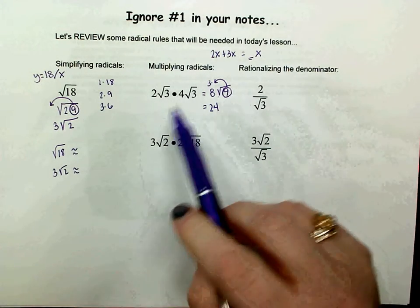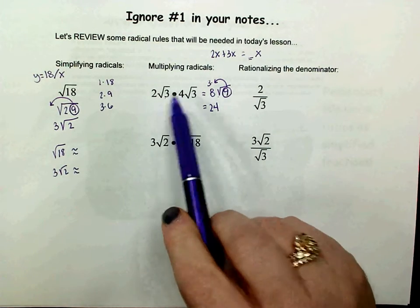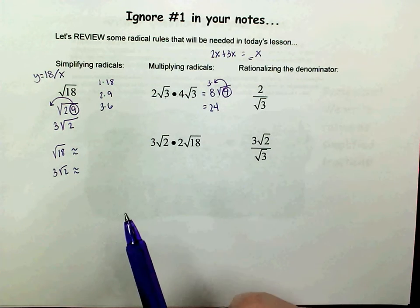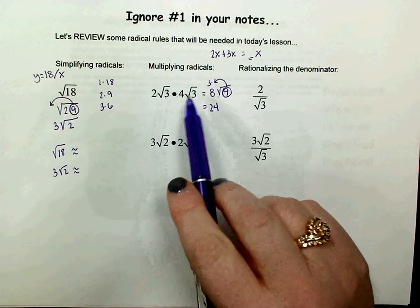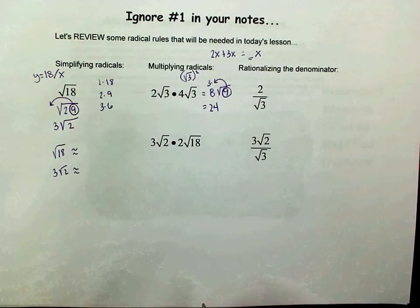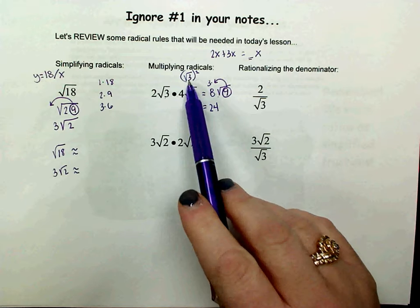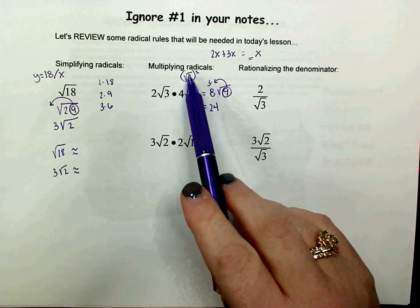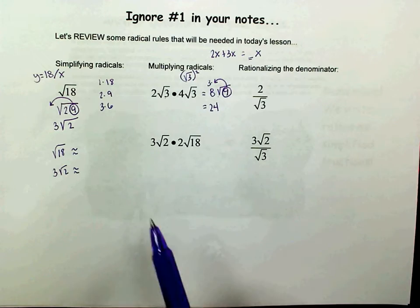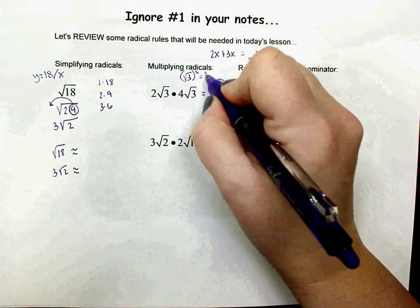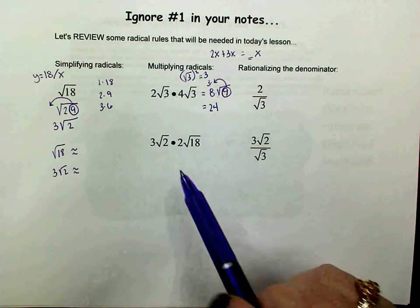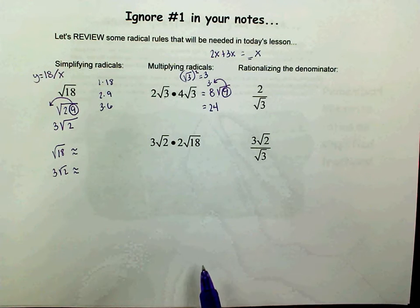If you do that enough times, you realize that every time you multiply the square root of 3 times the square root of 3, you get a 3 outside the radical. That's because when you multiply a number by itself, it's the same as squaring it. Multiplying square root of 3 by itself is the same as taking the square root of 3 and squaring it. Square roots and squaring are inverse operations — they undo each other — so that simply leaves me with a 3, and I get 24 as my final answer.